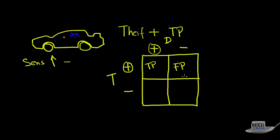False positives are not optimal. You don't want them because every time the alarm goes off, you have to go out, check the car, and make sure no one's getting in. Also, the more times the car alarm goes off falsely, the less likely you are to take it seriously. The other bad possibility is that your car is being broken into but the alarm doesn't go off — that would be a false negative.